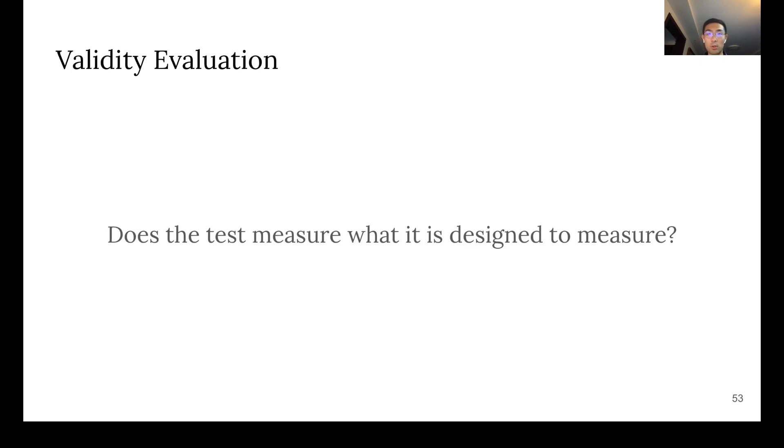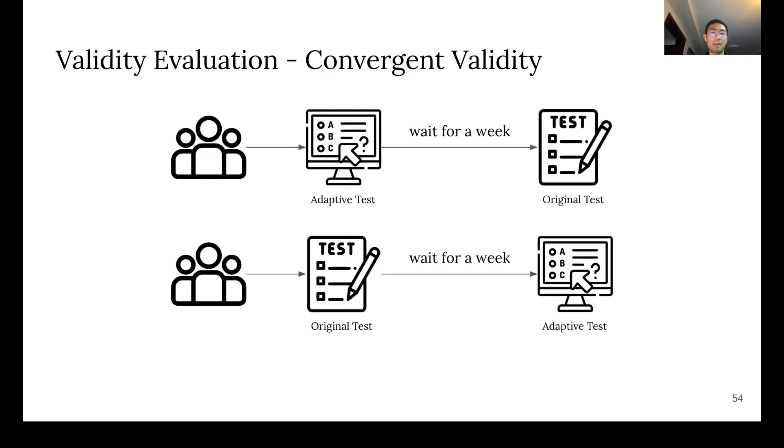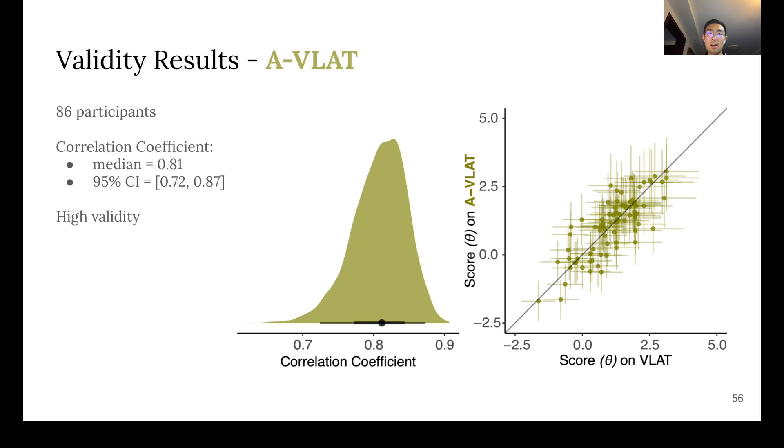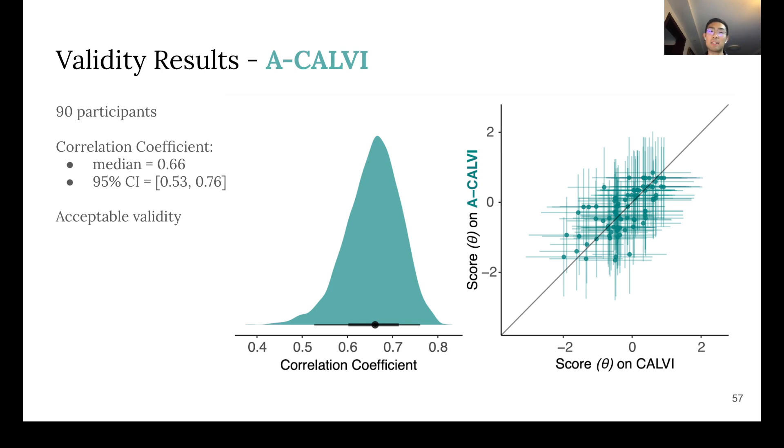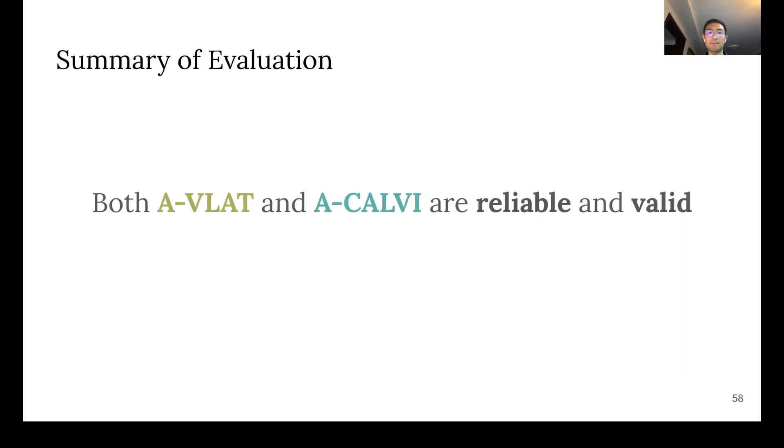For validity, we want to answer the question, does the test measure what it is designed to measure? And to test the validity of our adaptive assessments, we recruited participants to take both the adaptive and original versions of the assessments with a week in between. We separated participants into two groups in order to counter the ordering effect. We then computed the correlation coefficient between their performances on both versions. Our results show that A-VLAT has high validity, and A-CALVI has acceptable validity. In conclusion, both A-VLAT and A-CALVI are reliable and valid.